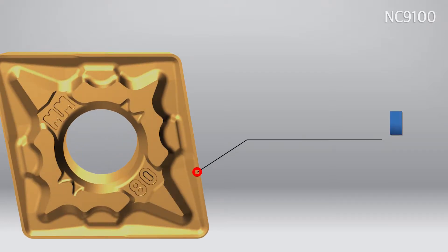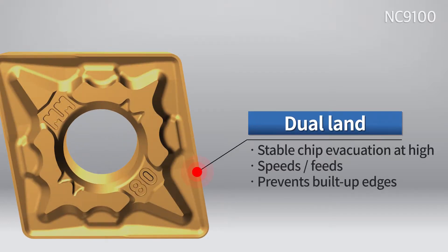The MM chip breaker with its dual inclined LAN design ensures a stable lifespan and minimizes built-up edges forming.